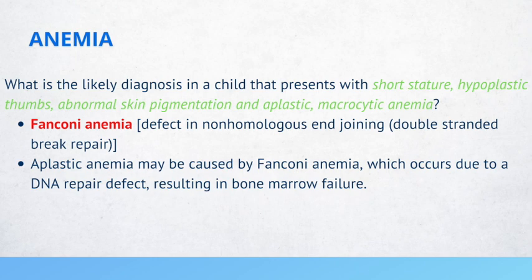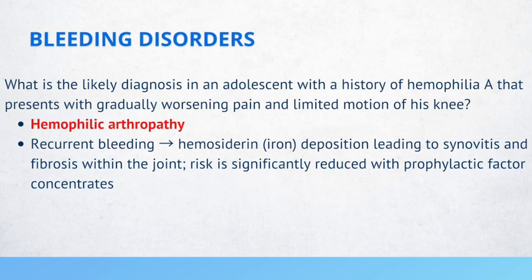What is the likely diagnosis in an adolescent with a history of hemophilia A that presents with gradual worsening pain and limited motion of his knee? Hemophilic arthropathy. With recurrent bleeding, they can have hemosiderin or iron deposition, leading to synovitis and fibrosis within the joint. The risk is significantly reduced with prophylactic factor concentrates.